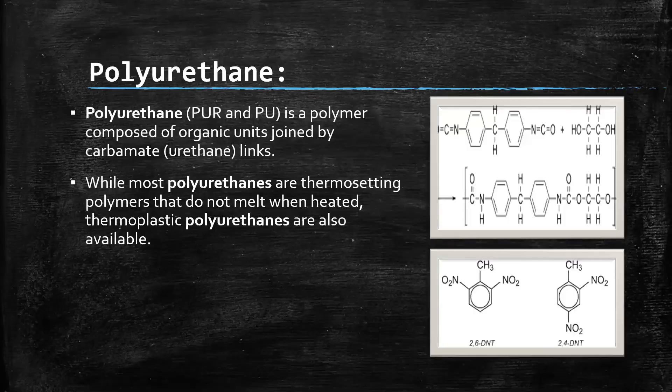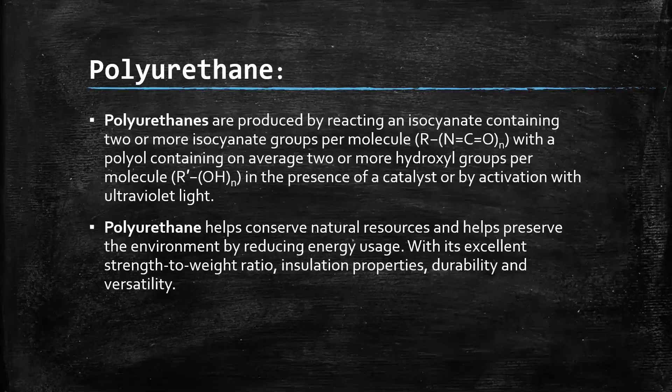Polyurethane is a polymer composed of monogenic units joined by carbamate linkages. While most polyurethanes are thermosetting polymers, thermoplastic polyurethanes are also available. Polyurethane is produced by reacting an isocyanate — containing two or more isocyanate groups per molecule — with a polyol containing on average two or more hydroxyl groups per molecule, in the presence of a catalyst or by activation with ultraviolet light. Polyurethane helps conserve natural resources and preserve the environment by reducing energy use through its excellent strength-to-weight ratio, insulation properties, and durability.